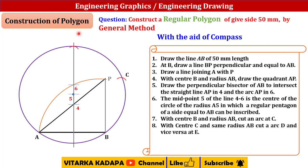Similarly, with center C and radius AB, cut an arc at D. With D as center and radius AB, cut an arc called E. Now we have got five points: A, B, C, D, E.